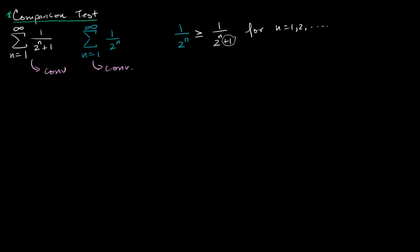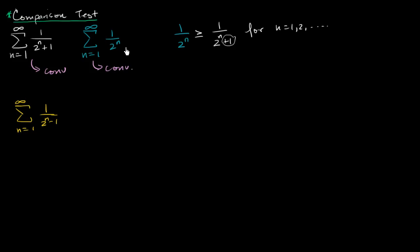Now let's see if we can apply a similar logic to a slightly different series: the sum from n equals one to infinity of one over two to the n minus one. In this situation, can we do just the straight up comparison test? Well, no — you cannot say that one over two to the n is greater than or equal to one over two to the n minus one. Here the denominator is lower, which means the expression is greater, so each of these terms can't provide an upper bound. But as n gets large, two to the n is really going to dominate the minus one, and really describe the behavior — but we just haven't proven that it works. That's where the limit comparison test comes in.